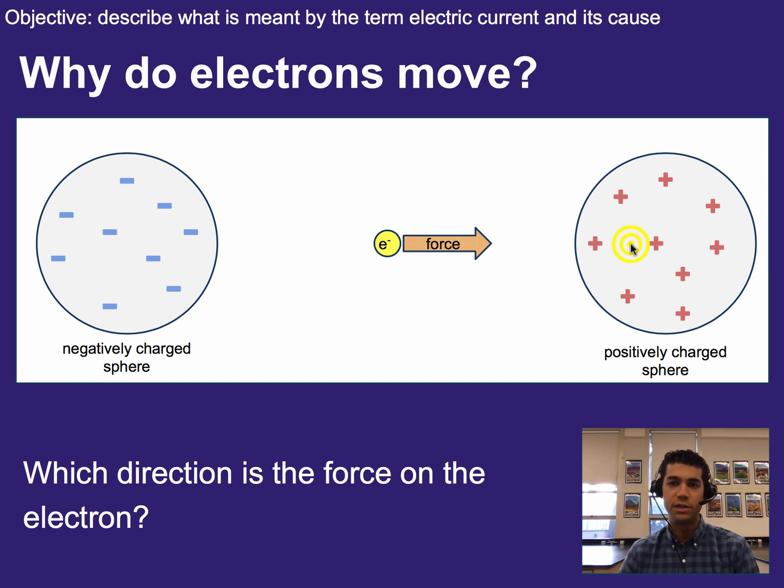Alright, hopefully you said it was to the right, where it's being attracted by this positive sphere, because an electron is negative, but it's also being repelled by this negative sphere. Since again, like charges repel and opposites attract, we get this idea that the electron would receive a force to the right.